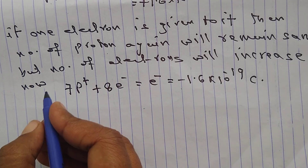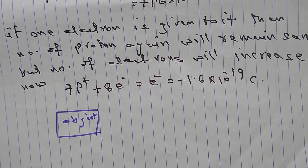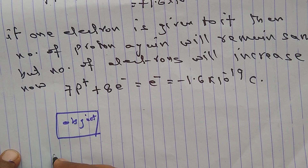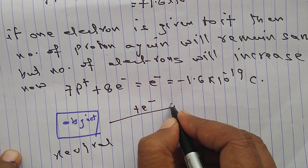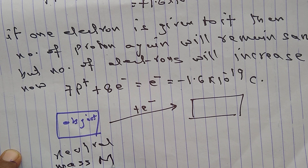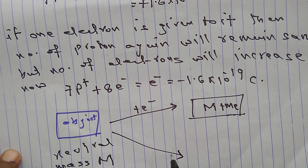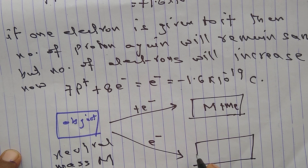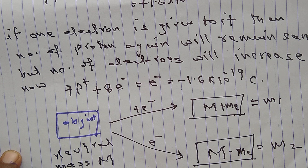For example, suppose an object has mass M and is neutral. If an electron is given to it, its mass becomes M + Mₑ. If it loses one electron, the mass becomes M − Mₑ. So if M1 is the mass after gaining an electron and M2 after losing one, then M1 > M > M2.